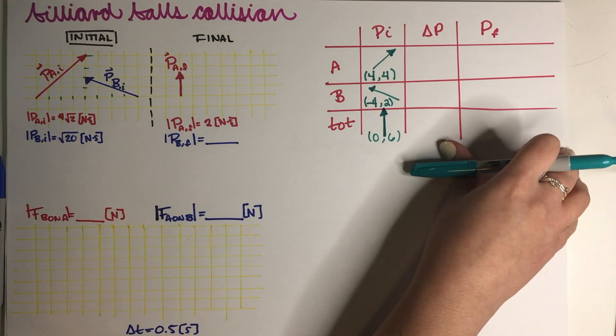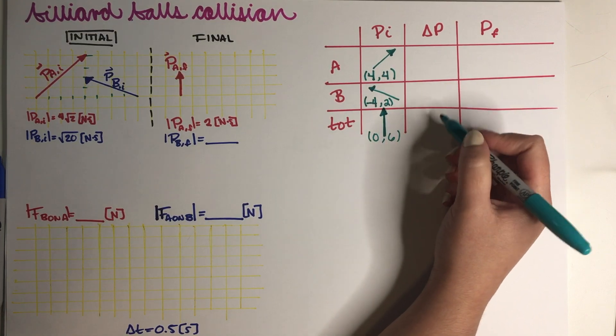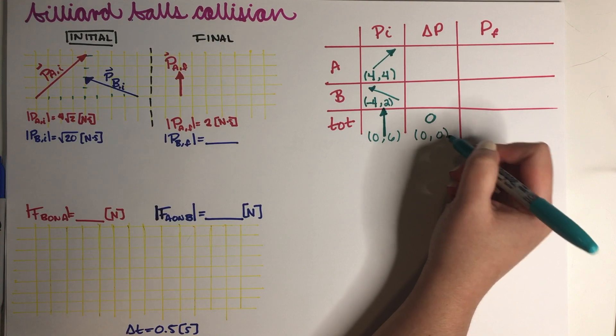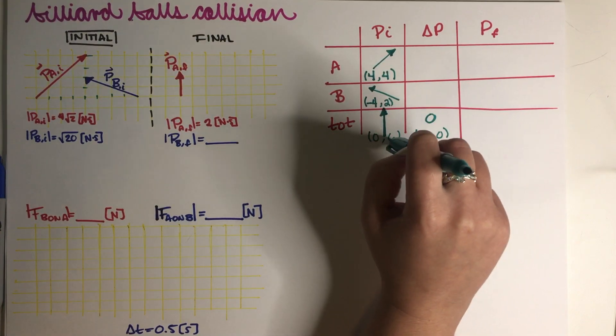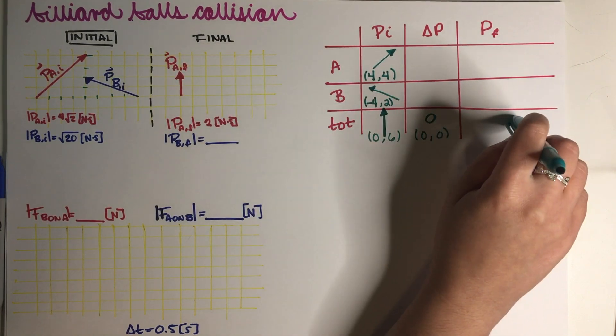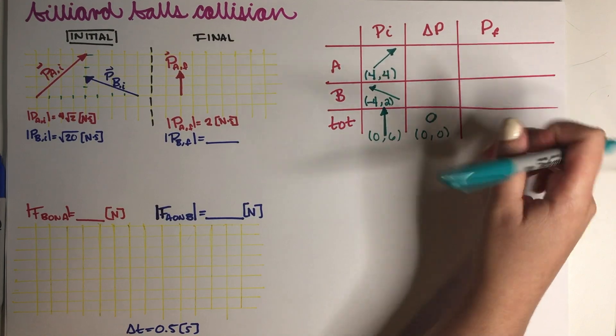Now the problem is very explicit in that there are no external forces. So because there are no external forces, this is a 0, which in vector form is just (0,0). And this row basically has to add up this way. And this means that I'm just going to copy this arrow and just put it over here.